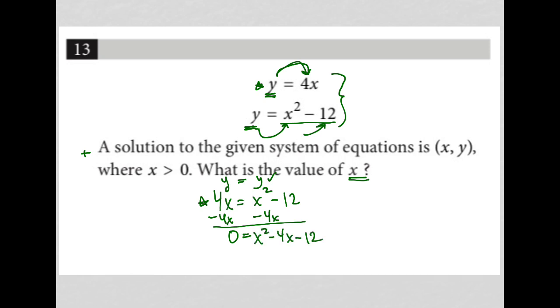All right. Now I'm trying to solve for x, so I can factor this trinomial. So I'd have 0 equals... What are two numbers that multiply to equal negative 12 but add up to negative 4? Well, that would be negative 6, so x minus 6, and plus 2, right?